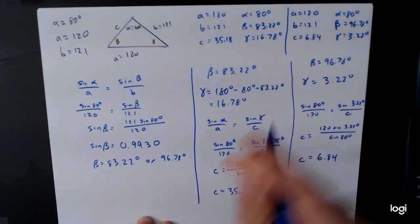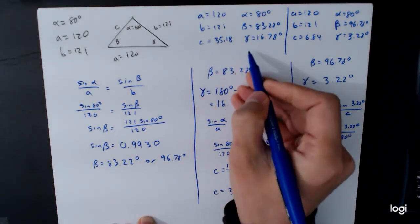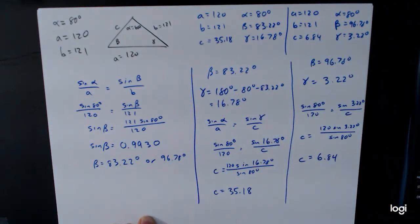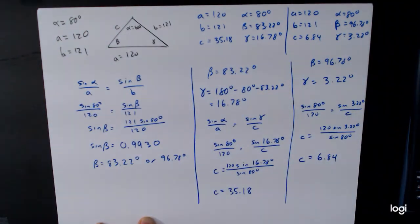And so in this case, we can see that there are two different triangles that we get. The sides and angles are here, or it's this one, just depending on which triangle, well, these are both possible triangles, these are both consistent with the given information.